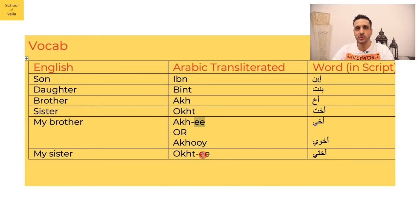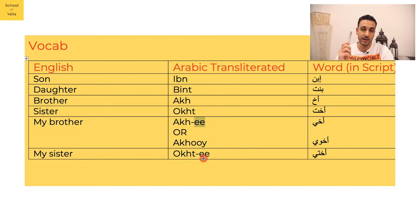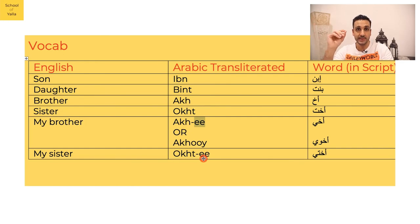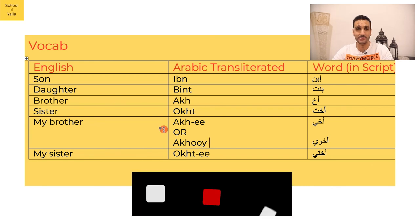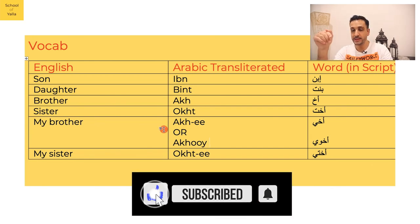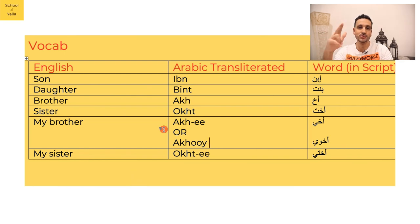It may take time to get used to thinking of the relationships this way, but first just get comfortable with the words: ibn, bint, akh, and ukht — then add the 'i' suffix for 'my.' For example, 'alami' means 'my pen,' 'kitabi' means 'my book,' and 'ismi' means 'my name.' Similarly, practice saying things like 'ibn akhi' or 'bint ukhti.' Let me know if you have any questions in the comment section — see you in the next video!